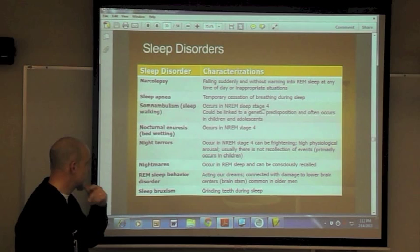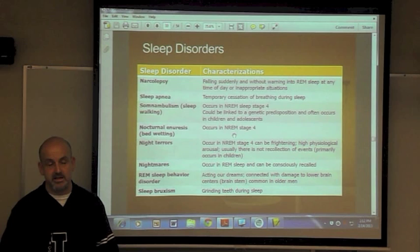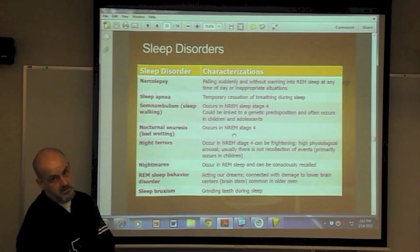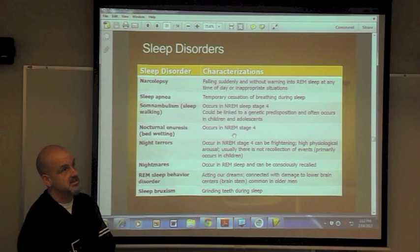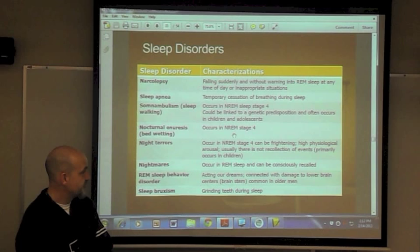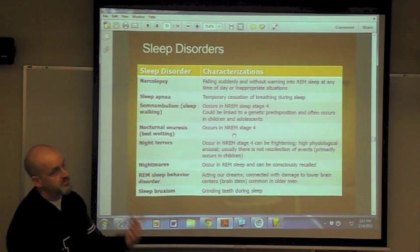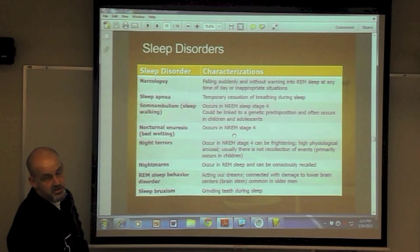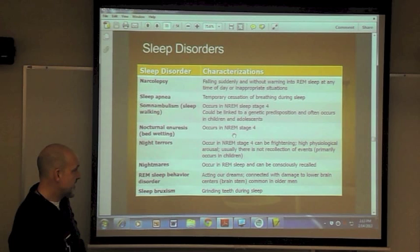Bed-wetting occurs in NREM stage four. Night terrors and nightmares are two disorders you need to know. Night terrors are very frightening, usually happen with young children, and occur in stages three and four — the child often can't remember anything because their brain is not awake. Their muscles constrict and they have heavy breathing. Nightmares are more common in all ages, occur in REM sleep, and because the brain is awake they can be recalled and the disturbance can often be alleviated. REM sleep behavior disorder is when you physically act out your dreams — dogs have a tendency to do this. Sleep bruxism is grinding your teeth during sleep.